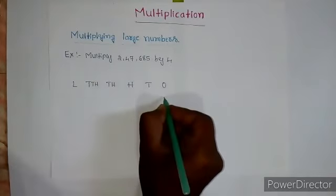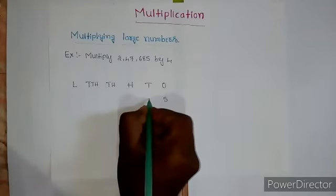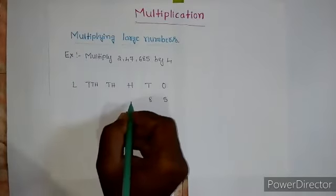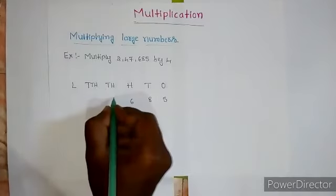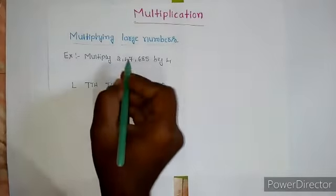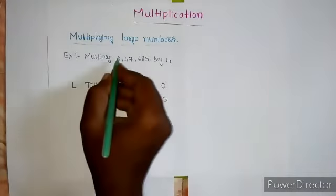Five is in the place of ones, eight is in the place of tens, six is in the place of hundreds, seven is in the place of thousands, four is in the place of ten thousands, two is in the place of lakhs.